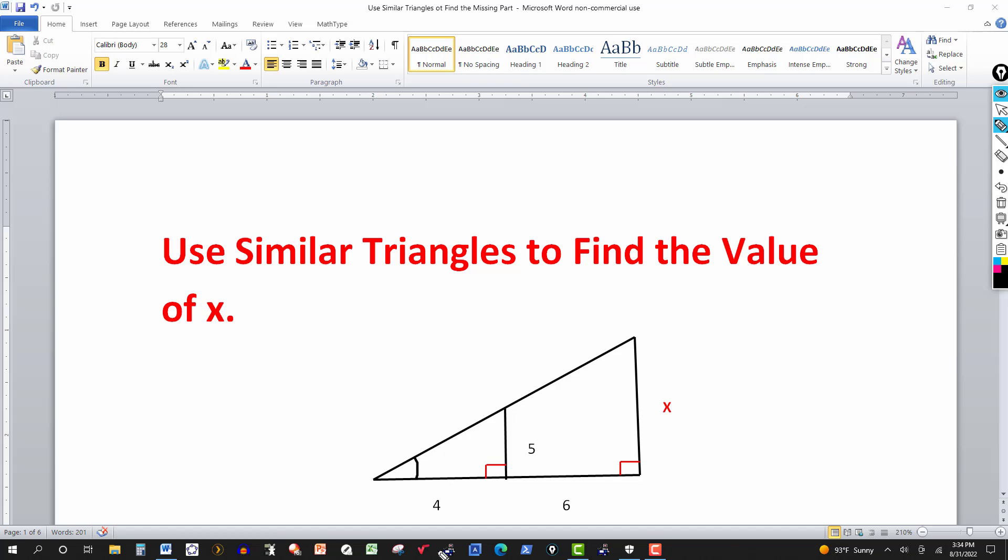Obviously, because the angles add up to 180, the third also has to be congruent to the corresponding one. But all you have to do is show that two corresponding angles have the same measure. That's the angle angle. So it's clear that these are similar.